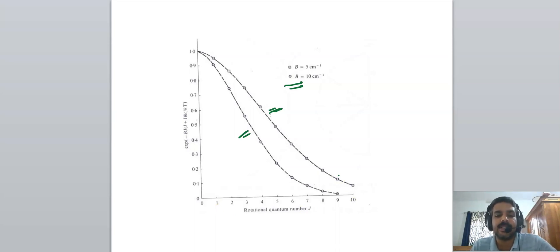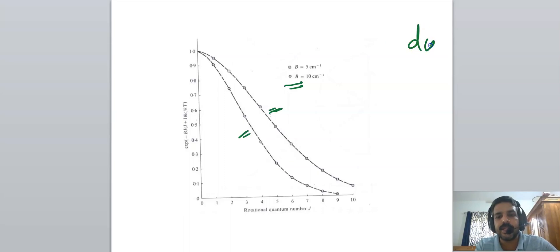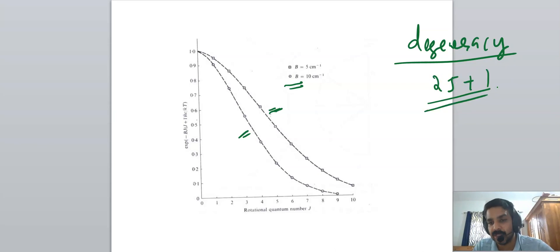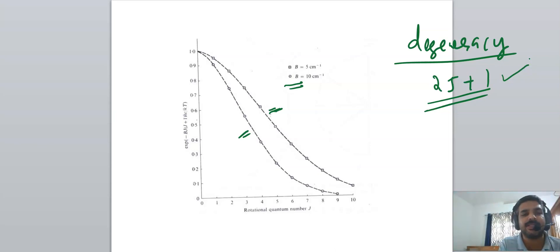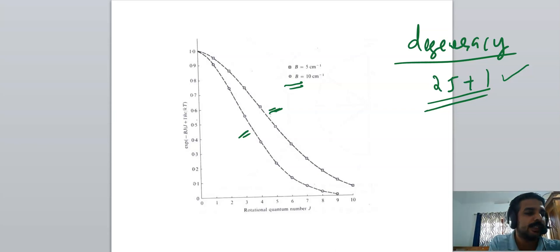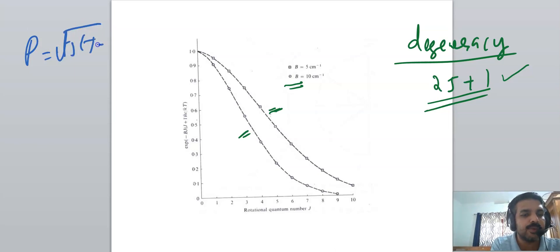Another factor affecting intensity is the degeneracy of the state. Rotational energy levels are 2J+1 fold degenerate. We can derive this using total angular momentum: P = √[J(J+1)] × h/2π. Since energy and angular momentum are directly proportional, energy levels can be predicted from angular momentum, which is also quantized in units of h/2π.